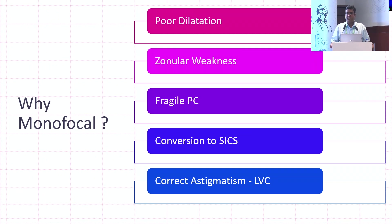Not only pseudo-exfoliation — in this particular case, brown cataract has been mentioned. The sir has already enumerated the problems with pseudo-exfoliation: poor dilatation, zonular weakness, and a fragile PC compared to the regular PC. Also, if you want to convert to SICS, you know that you don't have good outcomes with toric IOLs, and above-optimal outcomes are not there. Correcting astigmatism need not be only in the form of an IOL; you can also choose a laser vision correction in the form of a corneal procedure in these cases, which is safer.